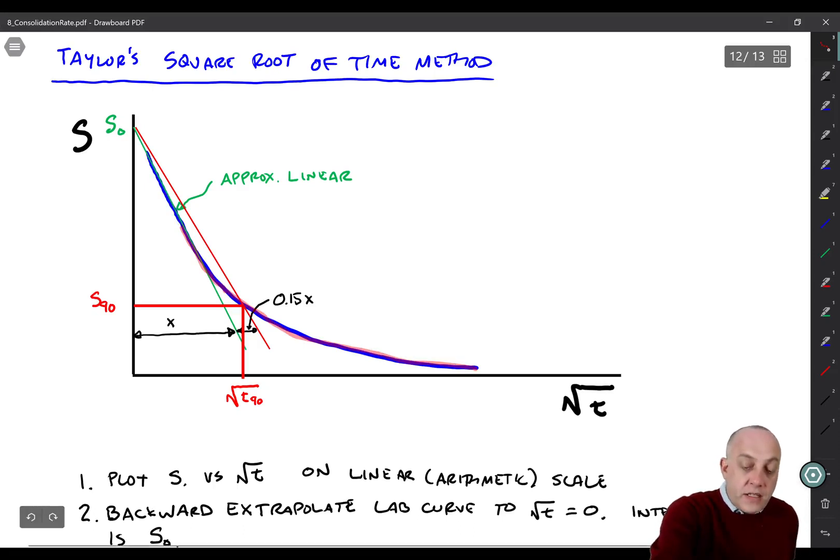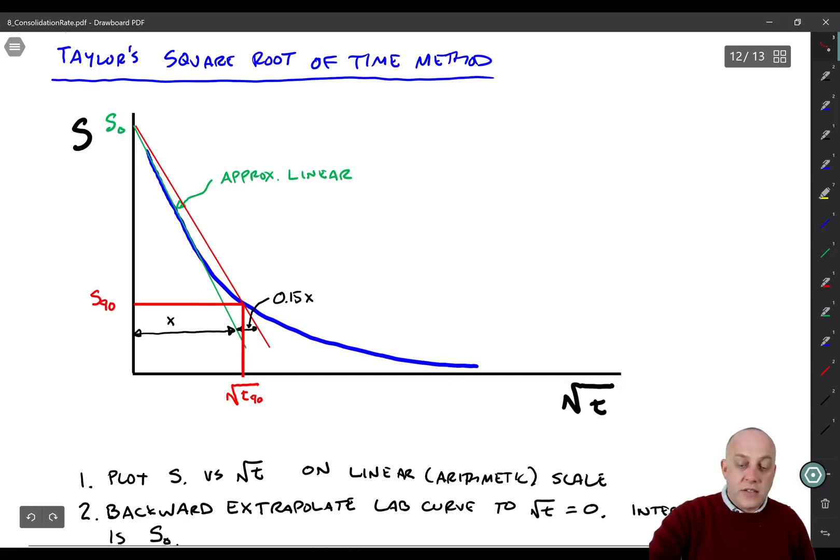Then you fit a line through the initially linear portion of the curve. That green line right there is going through the linear portion. It becomes nonlinear approximately 60% average degree of consolidation. And then what Taylor found is if you draw a second line that has a slope that's 15% less steep than the first line, that intersects the lab curve at a point that is 90% average degree of consolidation. So if this distance is x, then this little distance in there is 0.15x. And you can come in here and find the square root of t90, and then you can get the t90 value from that.